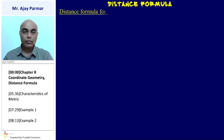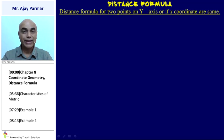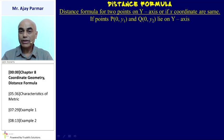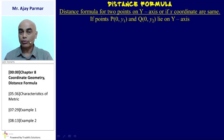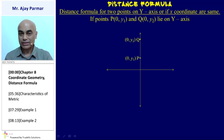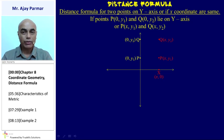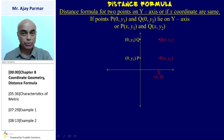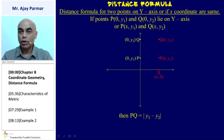In exactly the same way, we can find the distance formula for two points which are either on the y-axis or whose x-coordinates are the same. If P is (0, y1) and Q is (0, y2), or P is (x, y1) and Q is (x, y2), then the distance between these two points is |y1 − y2|.